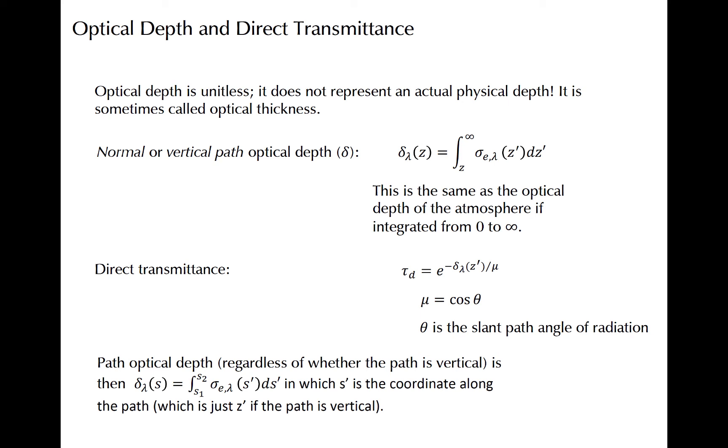Finally, note the general expression of path optical depth, where the path is denoted by s instead of the vertical coordinate z. Delta, as a function of s along a path from s1 to s2, is just delta as a function of z through the layer transited by the path from s1 to s2 divided by mu.